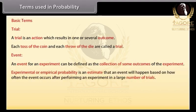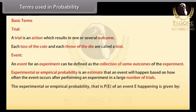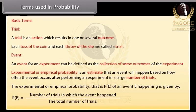Experimental or empirical probability is an estimate that an event will happen based on how often the event occurs after performing an experiment in a large number of trials. The experimental or empirical probability P(E) of an event E is given by P(E) equals number of trials in which the event happened upon the total number of trials.